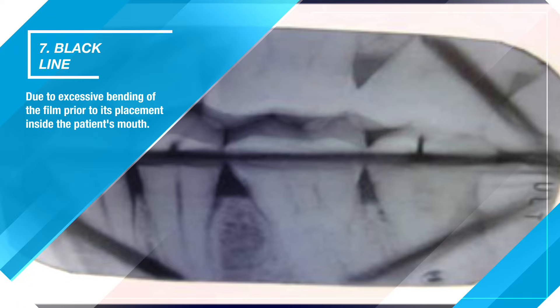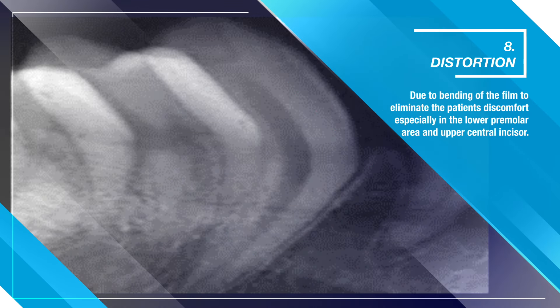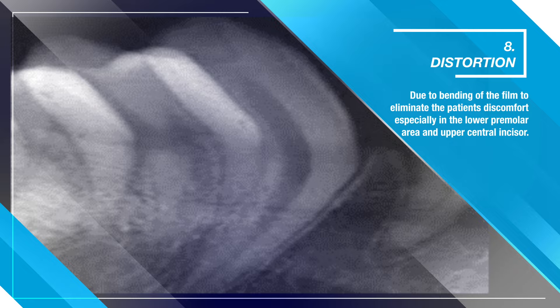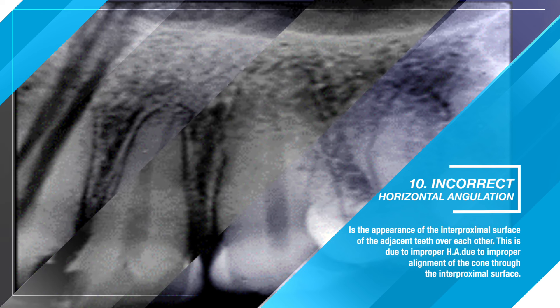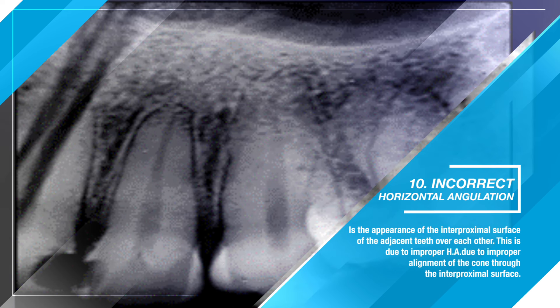Seven — black line. This is due to excessive bending of the film prior to its placement inside the patient's mouth. Eight — distortion. Due to bending of the film to eliminate the patient's discomfort, especially in the lower premolar area and upper central incisor. Nine — incorrect vertical angulation. This will lead to an elongated image due to insufficient vertical angulation, or a shortened image due to excessive vertical angulation.